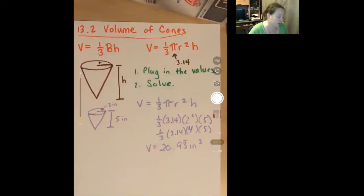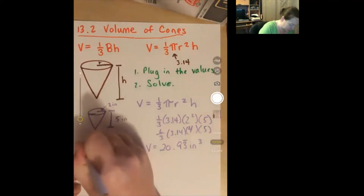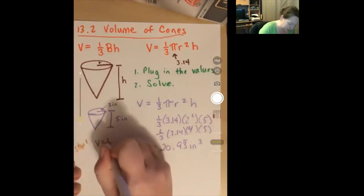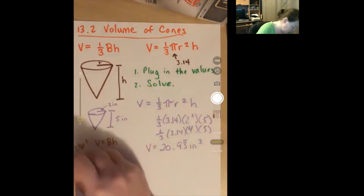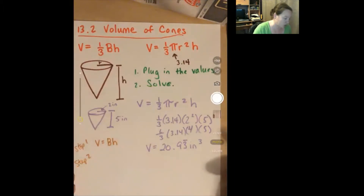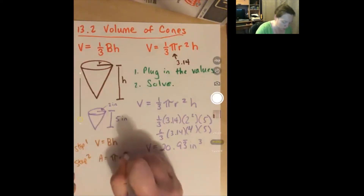What is the formula for the volume of a cylinder with base B and height H? Step one: volume equals base times height. Step two: what is the area of the base of the cone? The area is pi r squared because it's a circle.